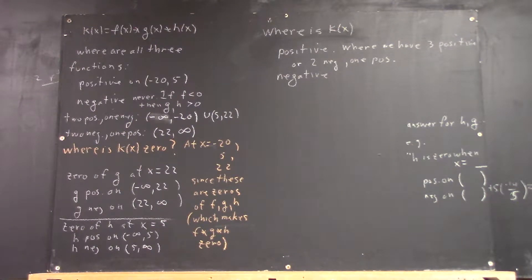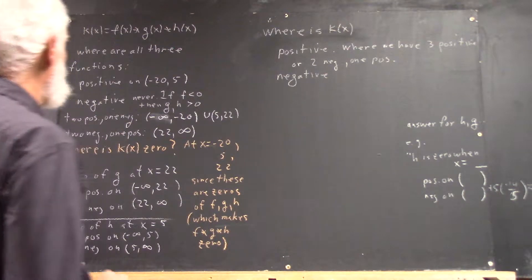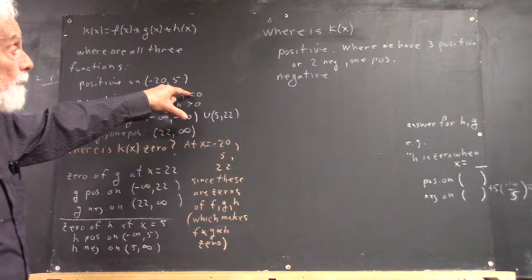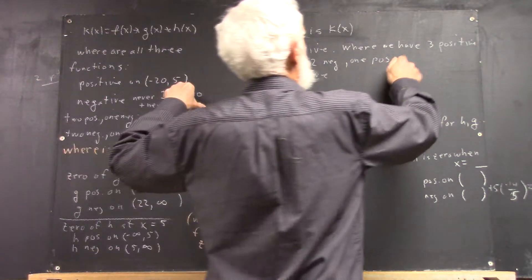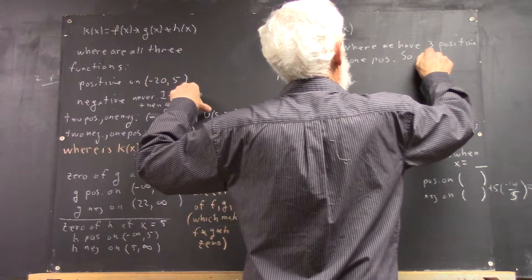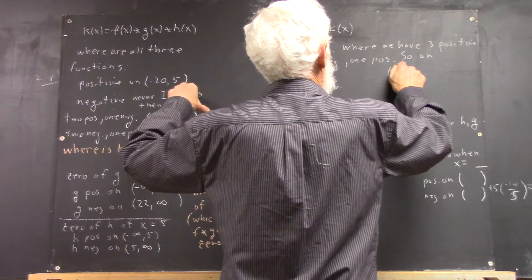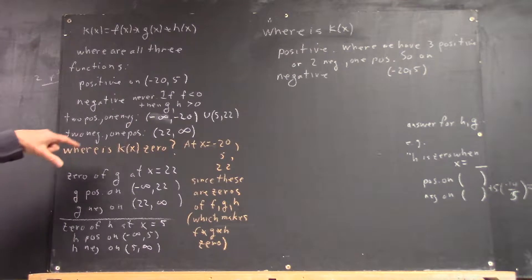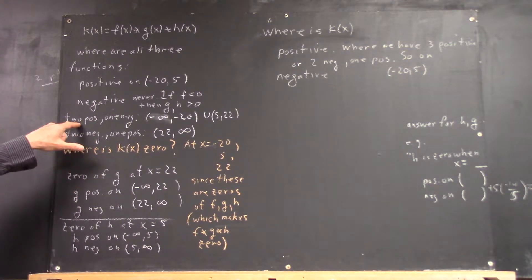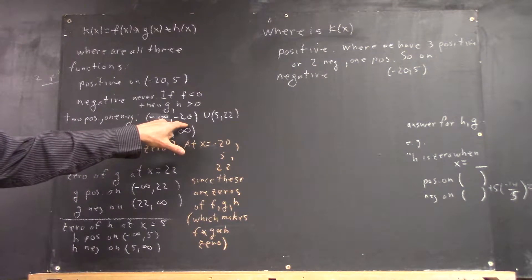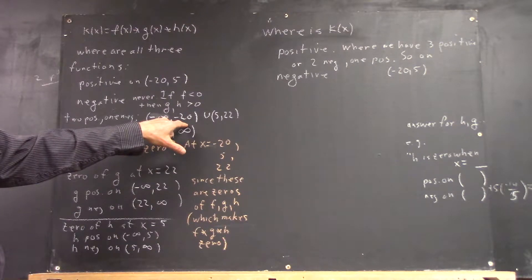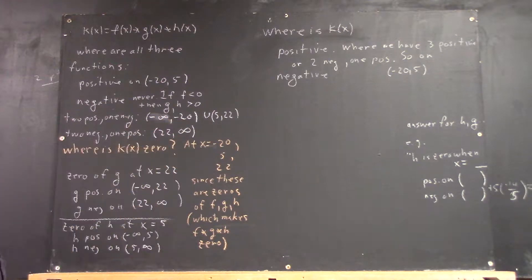Okay, well, where do we have three positives? On negative 25, right? On the interval negative 25, we got three positives. And on negative infinity, negative 20, never mind.